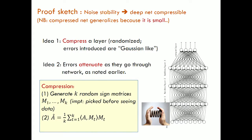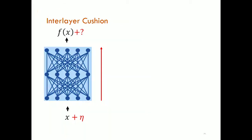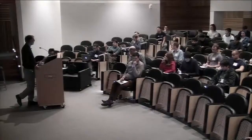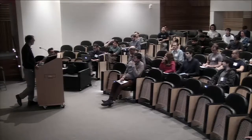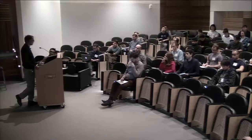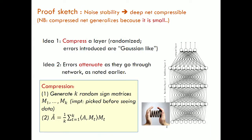The compression algorithm is something linear-algebraic: you pick k random sign matrices and take some random combination of those matrices. The Gaussianity is not so important — because we think the errors are Gaussian-like, we use a compression algorithm that generates Gaussian-like errors, but you could try other things if there was some other distribution.